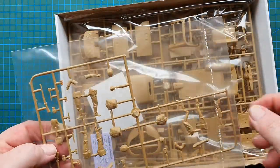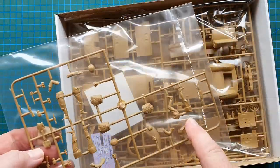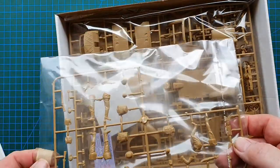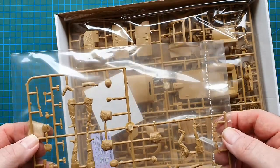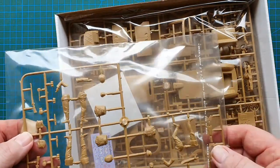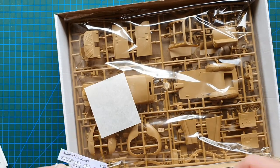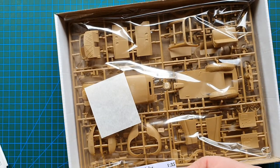First up let's have a look. First sprue out is your figures. Because this comes with German staff car with figures. These are your figures. All right so that's first sprue out there.